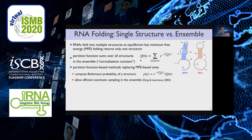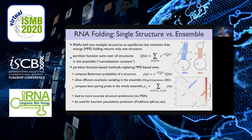The partition function is the normalization constant Q(x) that sums over the energy potentials of each individual structure — a summation over exponentially many different alternatives. With that we can compute the Boltzmann probability, because this normalization constant Q(x) defines the distribution, and the probability of each individual structure P(y) is simply the energy potential divided by this normalization constant. That allows efficient sampling in the ensemble. More importantly, we can define marginal probabilities — basically the base pairing probabilities in the whole ensemble — where P(i,j) is the summation of probabilities of structures that contain that particular pair i,j.